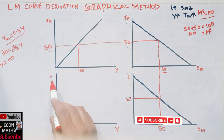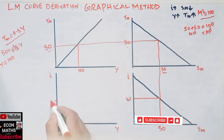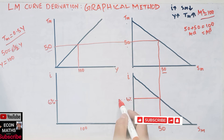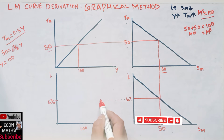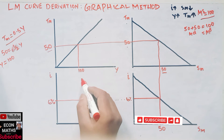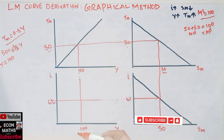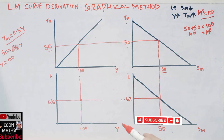On the vertical axis of the fourth graph we have rate of interest, and on the horizontal axis we have level of income. We take r = 6% and Y = 100. The intersection of these two values gives us a point on the LM curve.